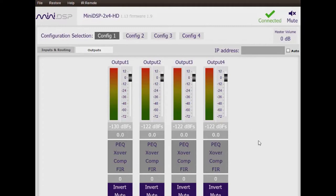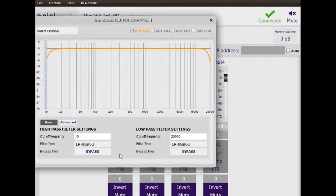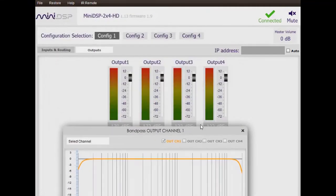From the outputs page, we have access to the crossover controls. The crossover controls have a high-pass and low-pass filter, which are completely configurable, and these are available on all four of the output channels.